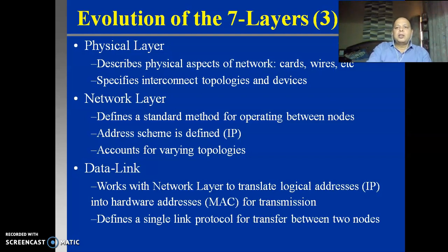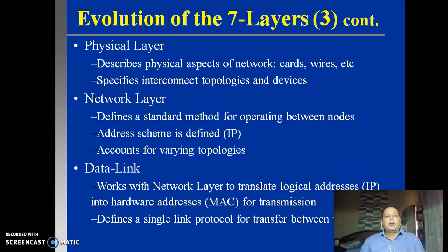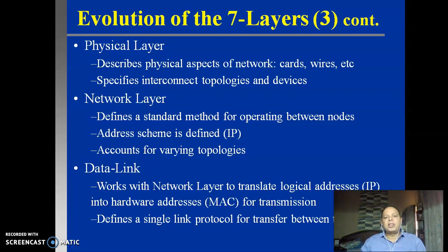The lowermost layer is the physical layer. As you can see here, the physical layer consists of the physical media. The physical media is nothing but the actual card - the microcontroller-based card - which is designed so that the process of actual data transmission or reception takes place. This is particularly connected to the media, which can be a cable, fiber optics, or even wireless. Basically, the physical layer describes the physical aspects of the network and how the computers are connected to each other. It specifies the interconnect topologies.